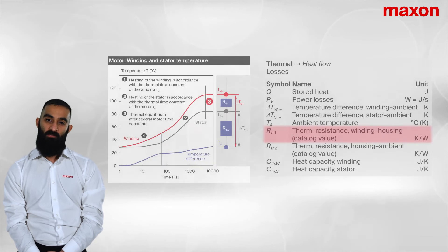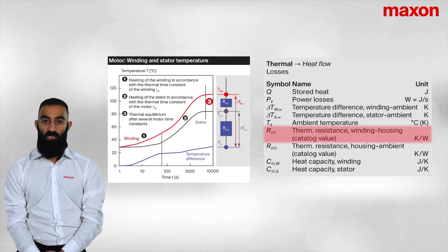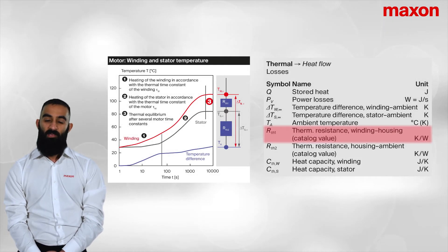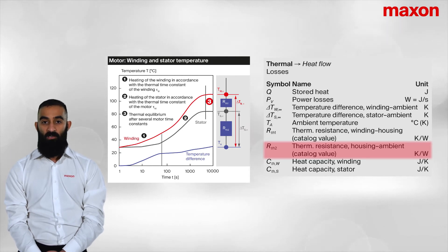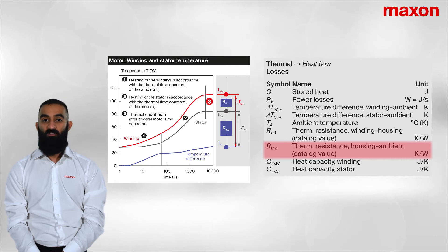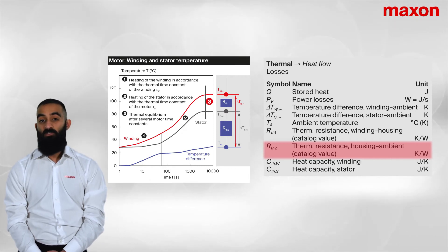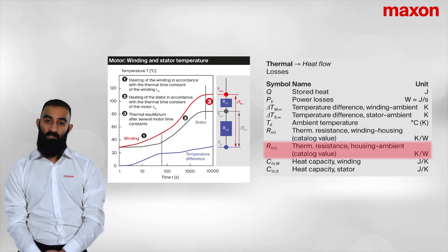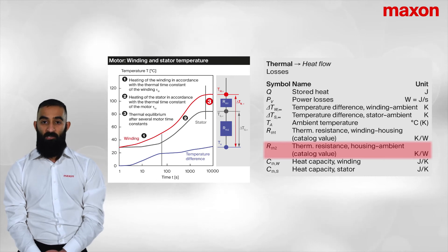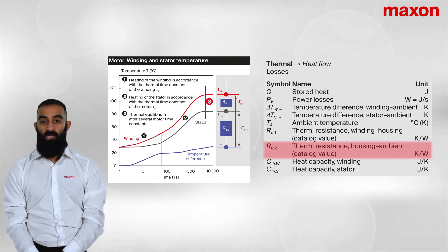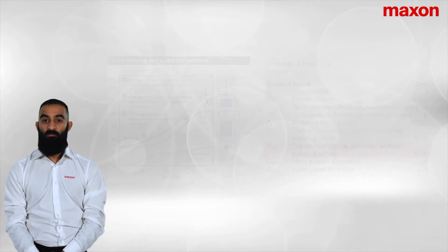RTH1 is a parameter that is purely dependent on the design of the Maxon motor. Therefore, as a user, there is not much control over this. However, RTH2 — the thermal resistance between the stator and the housing — is a parameter that is within the user's control. Enforcing some external cooling to the surfaces will help in better heat dissipation. The goal is to optimise either of these parameters such that the winding temperature is kept to a minimum and allows better motor operation.